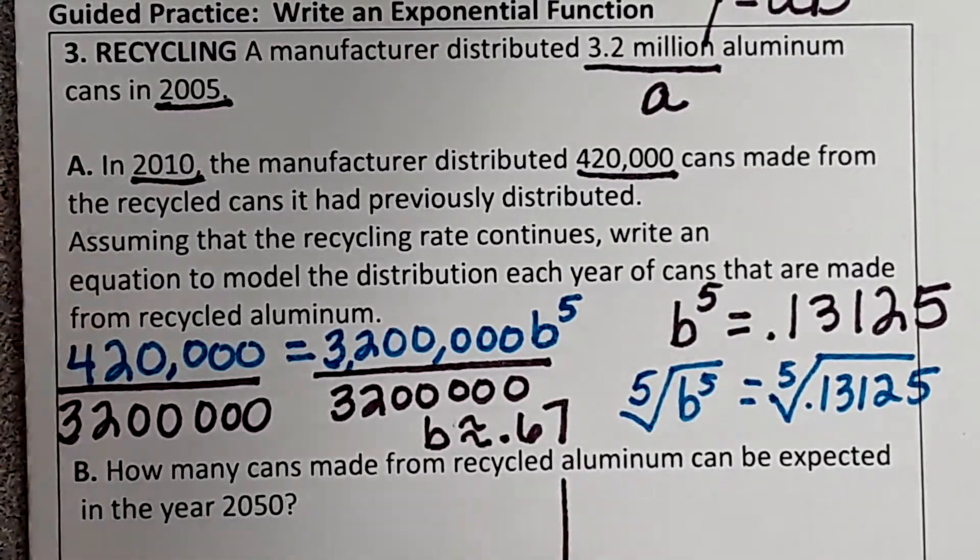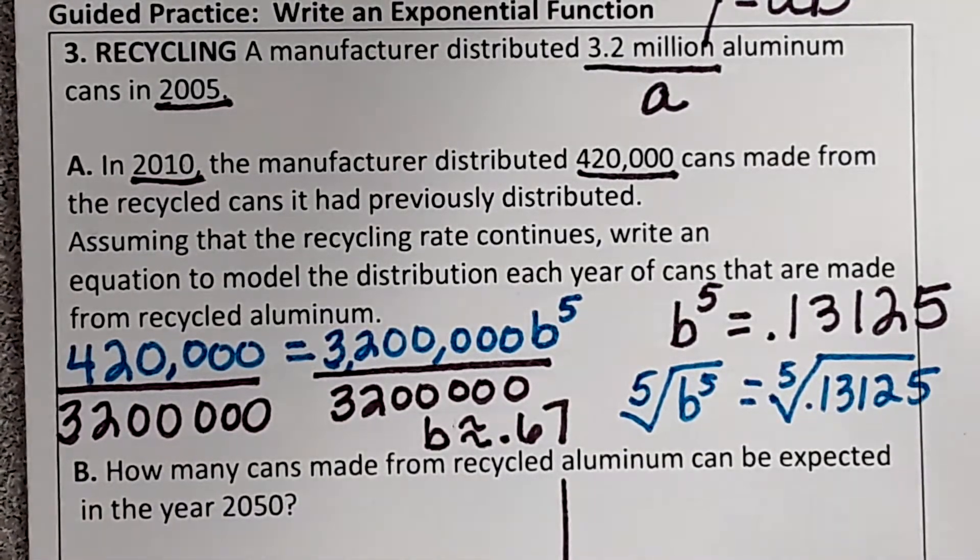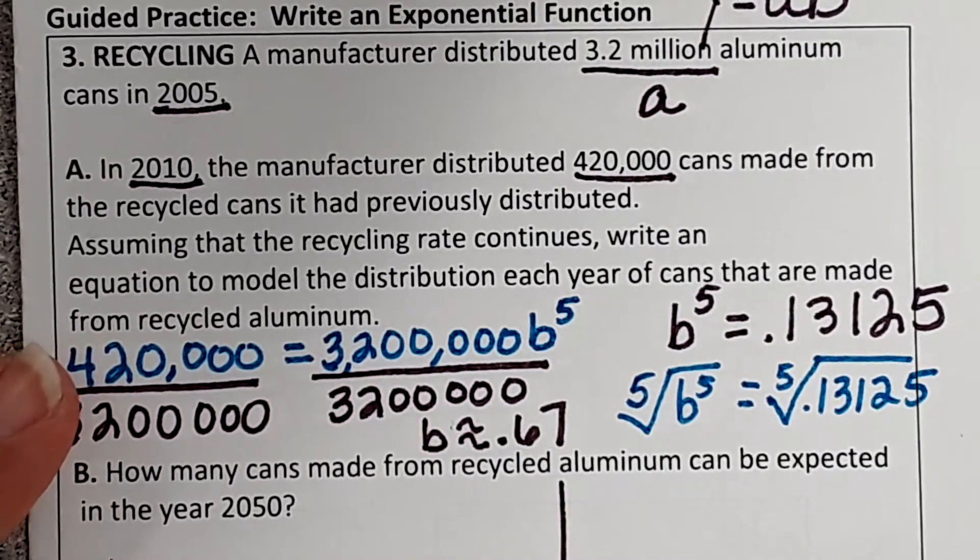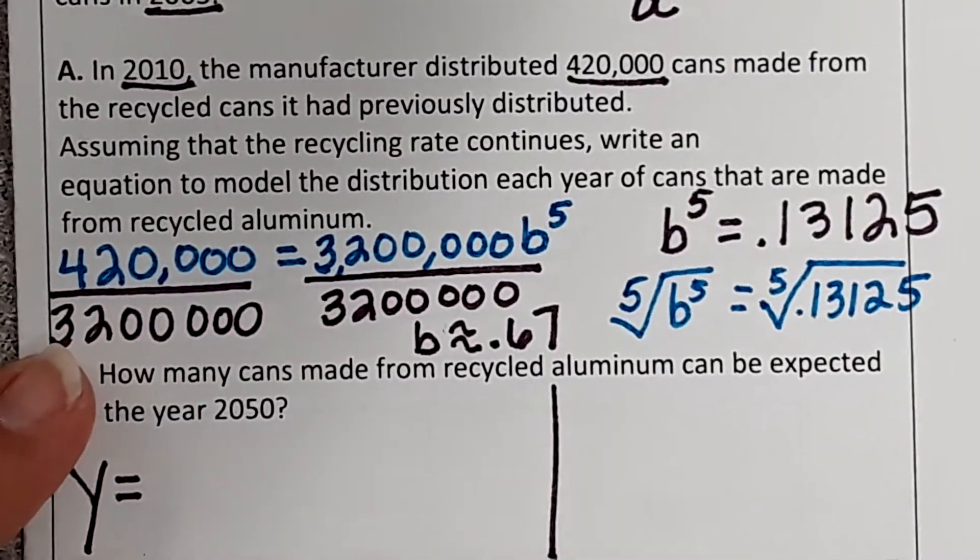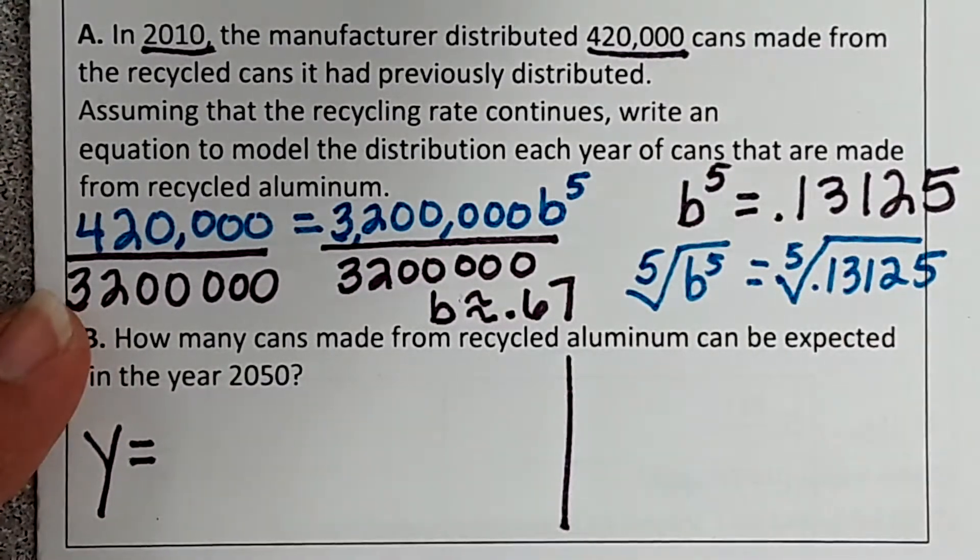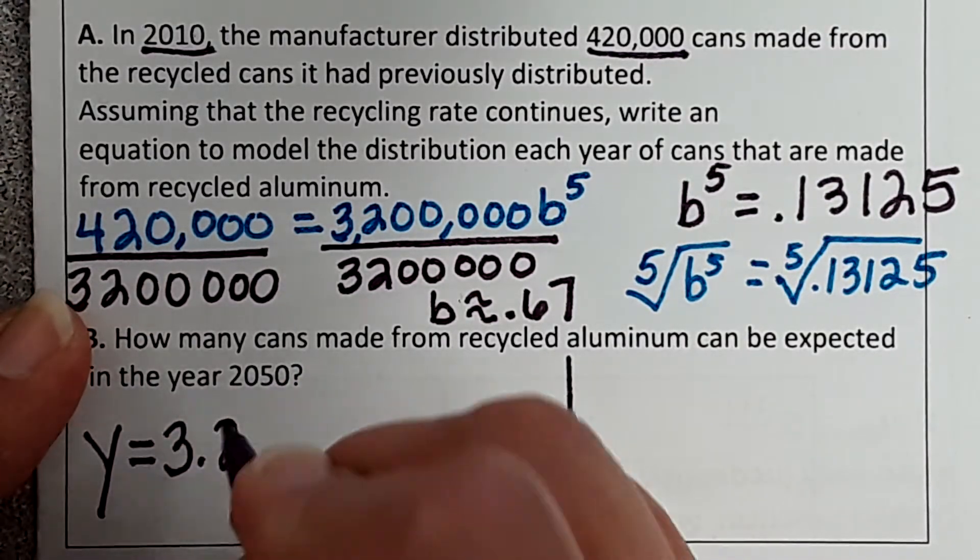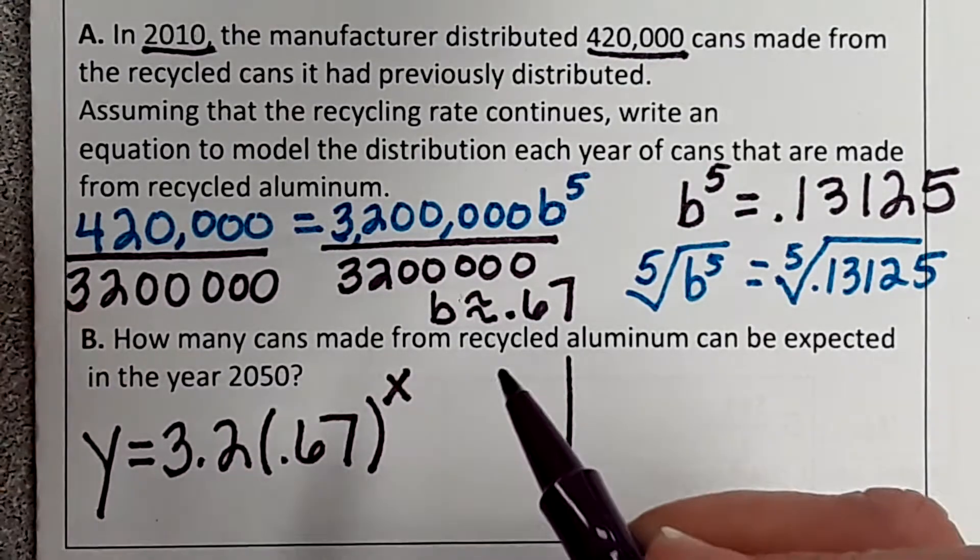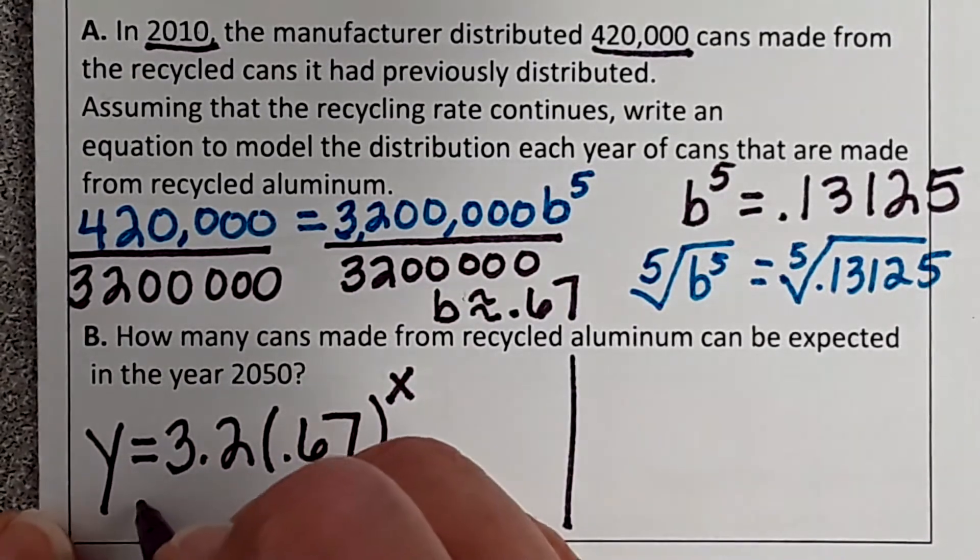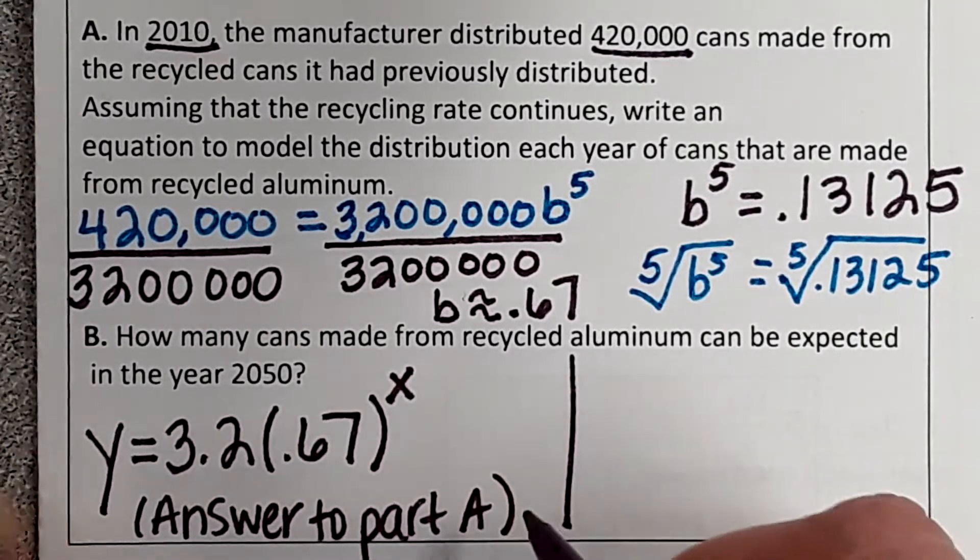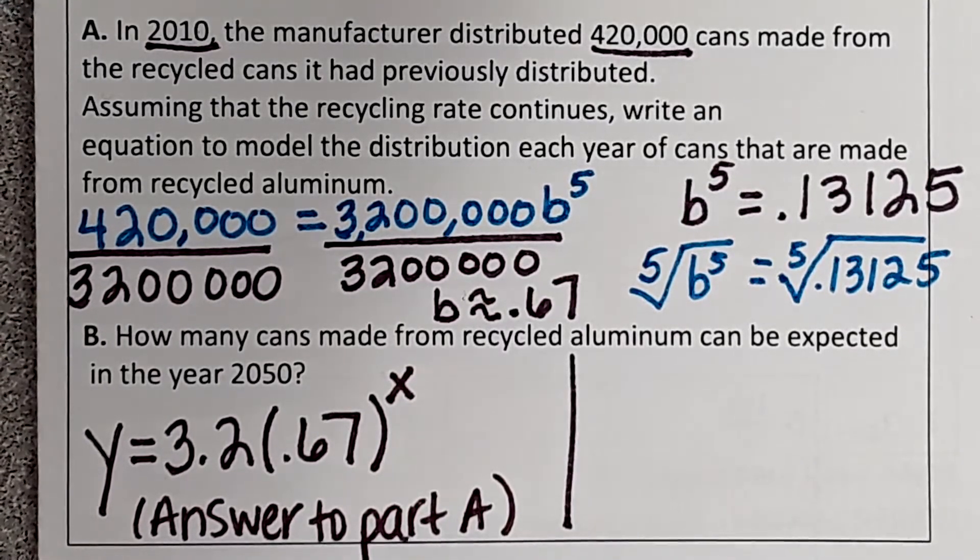So we're going to write our equation. The only reason we had to do this is because we're always going to look for Y and we're going to plug X in. We didn't have an equation, we were just solving for B, but now we have an equation. So Y will always be there. What is our A? What did we start off with? What was our initial value? 3.2 million. We can actually write it as 3.2 now that we have our 0.67. So that's the answer to part A. That's what we did all of that work for, to get this equation.